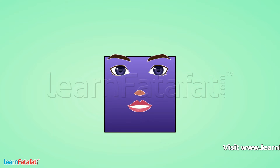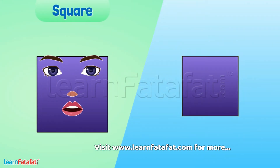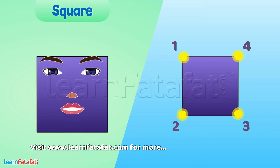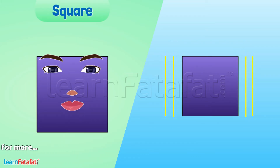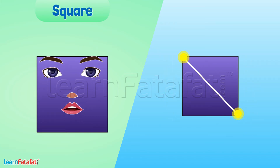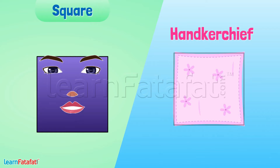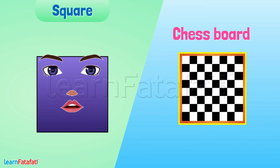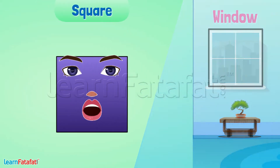Hello! I am a square. I have four sides and four corners. The length of all my four sides is equal. When you join two opposite corners, you get a diagonal. I have two diagonals. You can see me in a handkerchief, chess board, windows, and everywhere surrounding you.